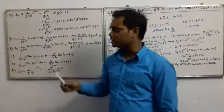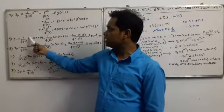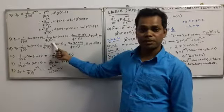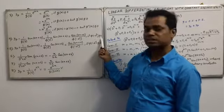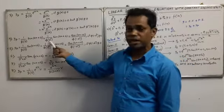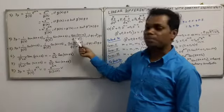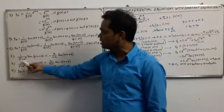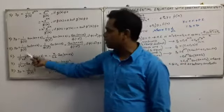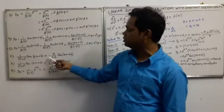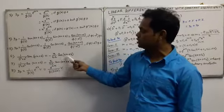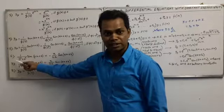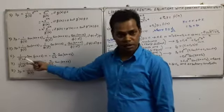For the trigonometric function: yp = 1/g(D) * sin(ax + b) = 1/φ(D^2) * sin(ax + b). If φ(-a^2) ≠ 0, then that formula becomes sin(ax + b) / φ(-a^2). If φ(-a^2) = 0, then we use this formula: 1/(D^2 + a^2) * sin(ax + b) = -x/(2a) * cos(ax + b). Here φ(D^2) is replaced by -a^2, so -a^2 + a^2 = 0.